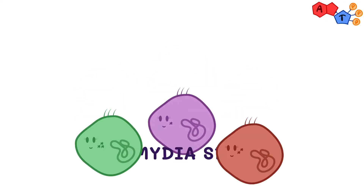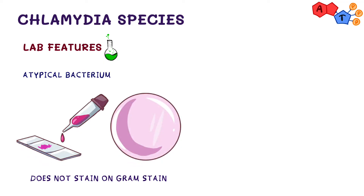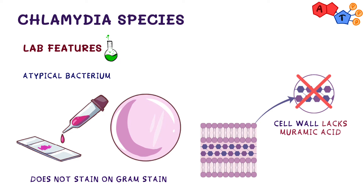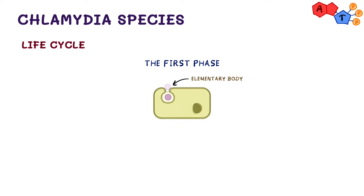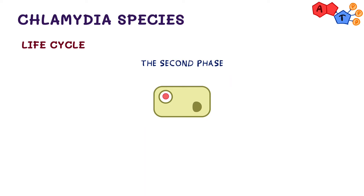Please welcome Chlamydia. Chlamydia is an atypical bacterium because it does not stain well with Gram stain. This is due to its unique cell wall that lacks muramic acid. Chlamydia has two phases to its life cycle. The first phase happens when the elementary body enters the cell via endocytosis and transforms into reticulate bodies in the endosome.